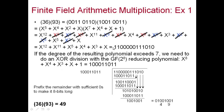Performing the XOR division: 1 XOR 1 = 0 (cancel leading term), then continue bit by bit. When the remainder still has degree ≥ 8, bring down bits and repeat the XOR with the reducing polynomial. We continue this process, similar to long division, until the degree of the remainder is less than 8.